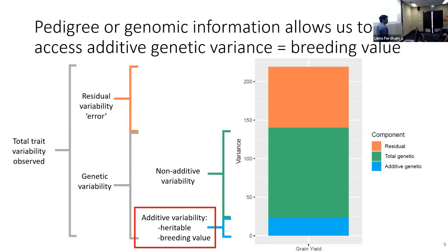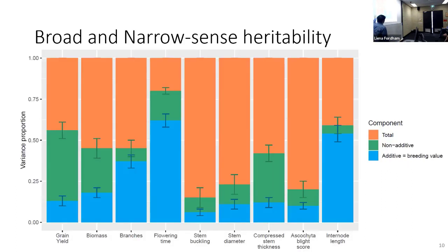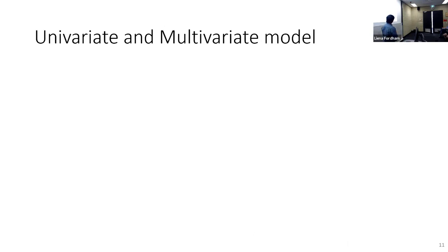Looking at my traits, aside from flowering time, internode length, and maybe branches, most of my traits have a really small additive component. So pedigree information is key — that way I can address this small variability better and do better prediction. I will use pedigree information for all my models. The other thing I want to do is see if a multivariate model improves over a univariate model. In my univariate model, I estimate a random effect of genotype for the trait using an autoregressive spatial model to explain field variability.